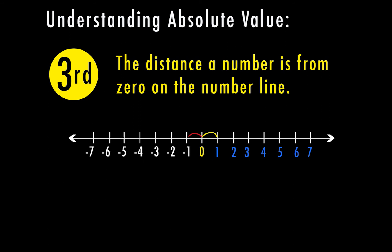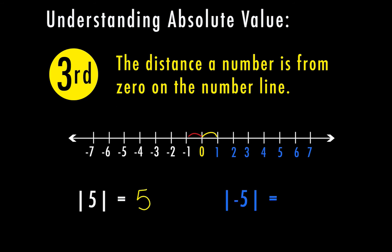First, one important thing to point out: absolute value is represented by bars before and after the number. So anytime there's a number between two upright bars, that is the absolute value sign. The absolute value of five asks how far is five from zero — that's five places, so the absolute value of five is five. What about the absolute value of negative five? Negative five is also five places from zero, so the absolute value of negative five is also five.